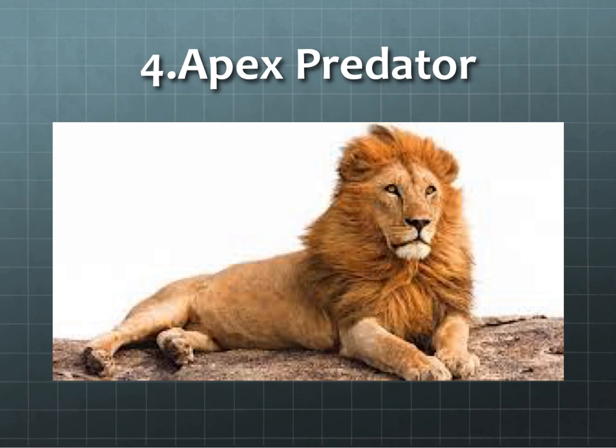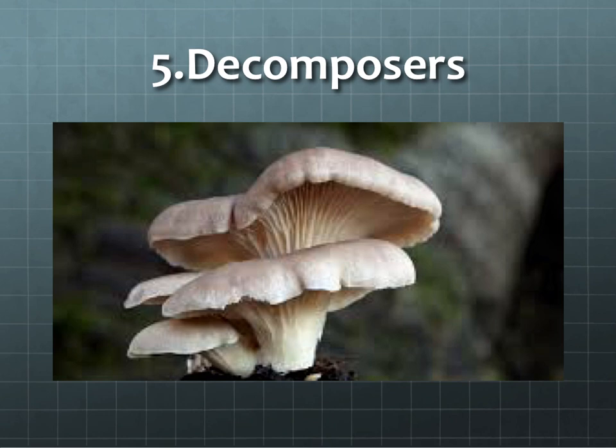Number four: the apex predator. They are also known as the alpha or top predator — they are on top of the food chain. The lion is a fair example. They are usually defined in terms of trophic dynamics, meaning that they occupy the highest trophic levels.